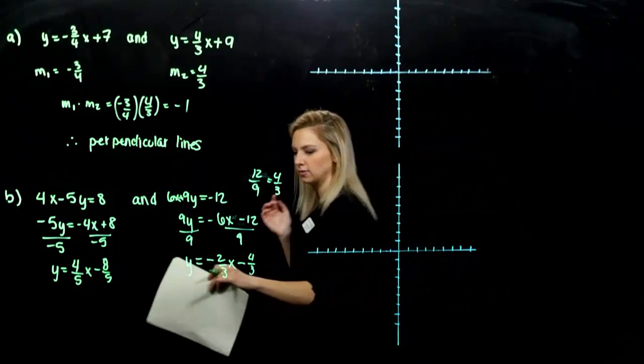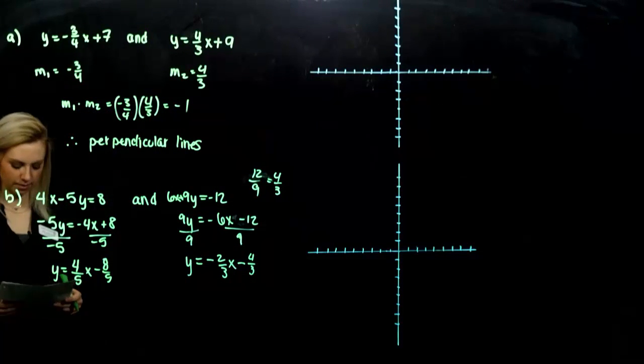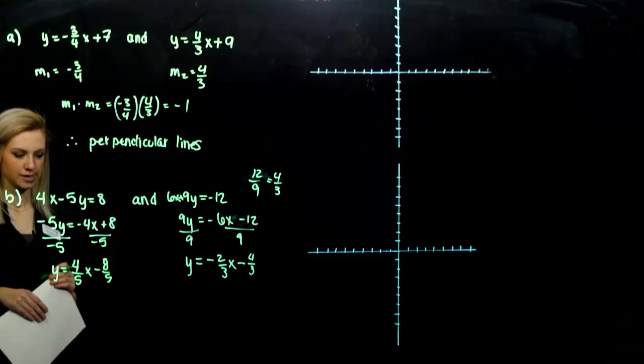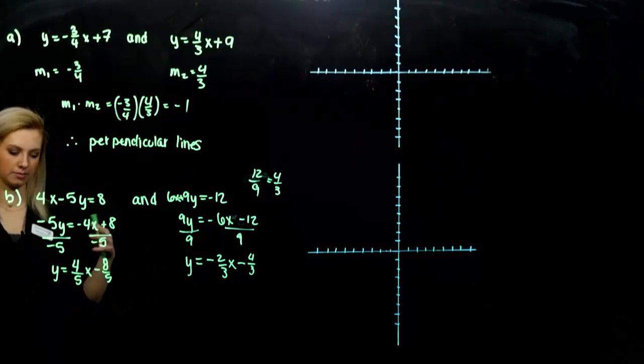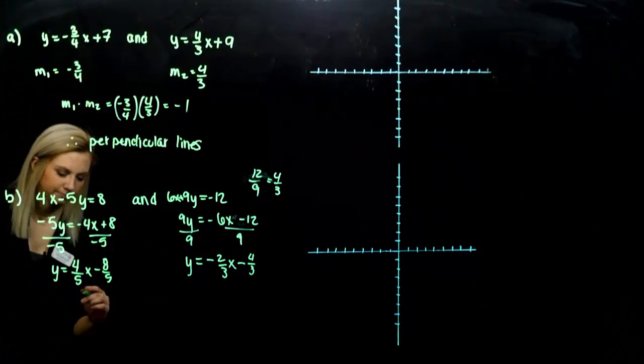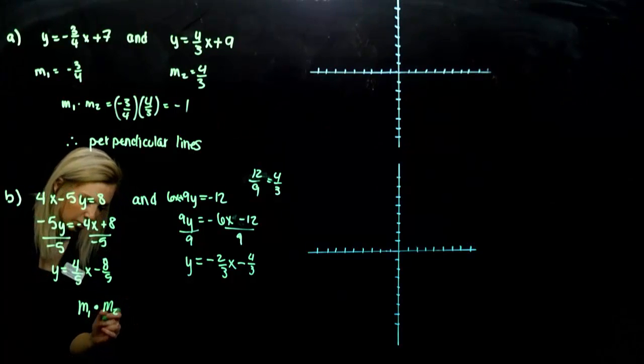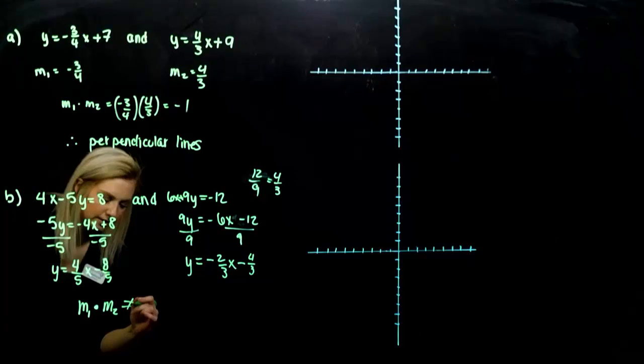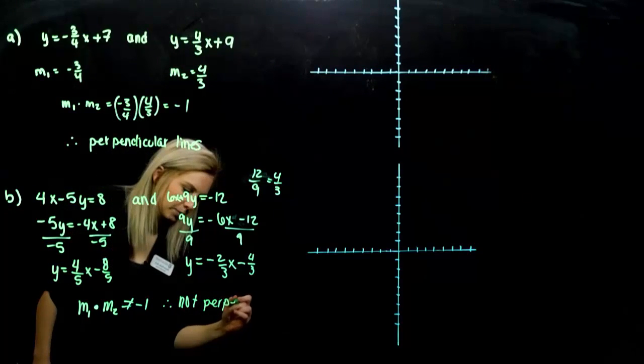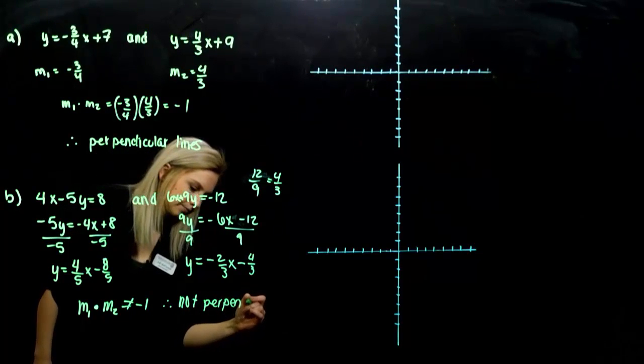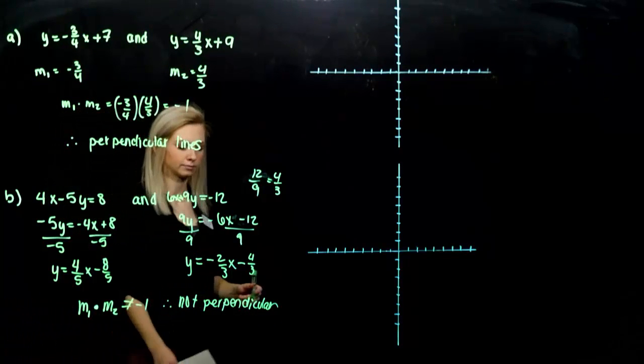And now that we have slope intercept form, looking at the two slopes, are they perpendicular or not? So they're not opposite reciprocals. Or if I multiply them together, I'm not going to get out negative 1. So I'm just going to say, this is my justification. Slope of the first times slope of the second is not equal minus 1. Therefore, they're not perpendicular. Alright.